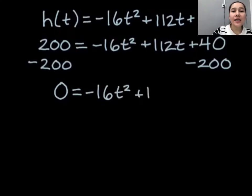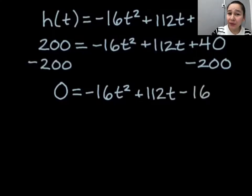The equation that we have now after we have done this is zero, which is what we wanted, equal to negative 16t squared plus 112t minus 160. Now we need to solve this and there are a lot of different techniques we can use, but generally speaking the easiest technique if you can do it is to factor.